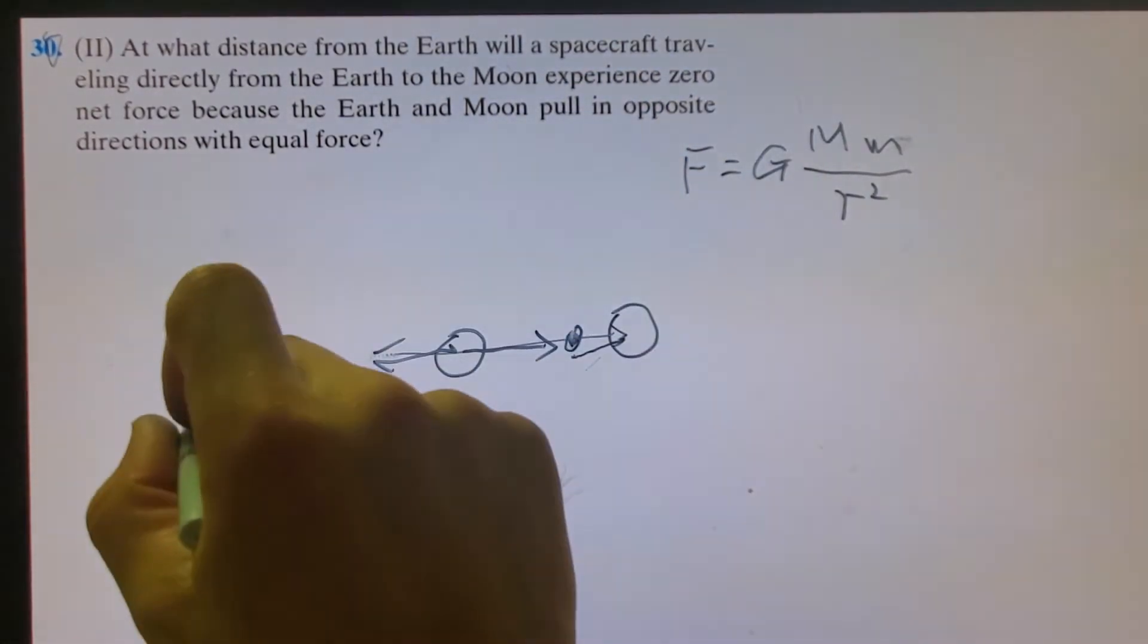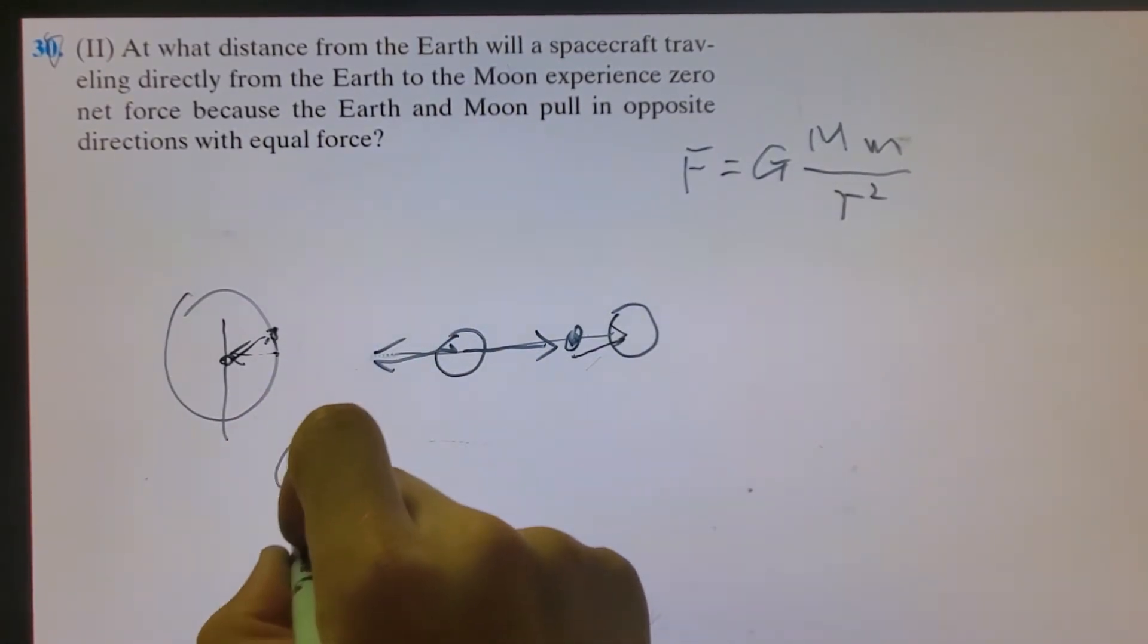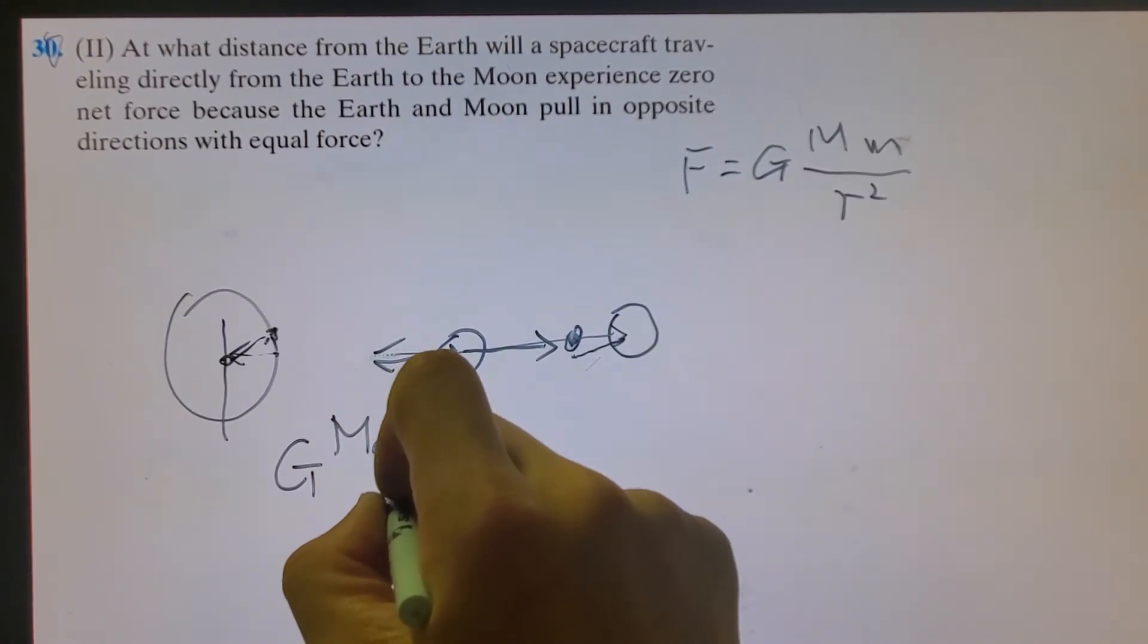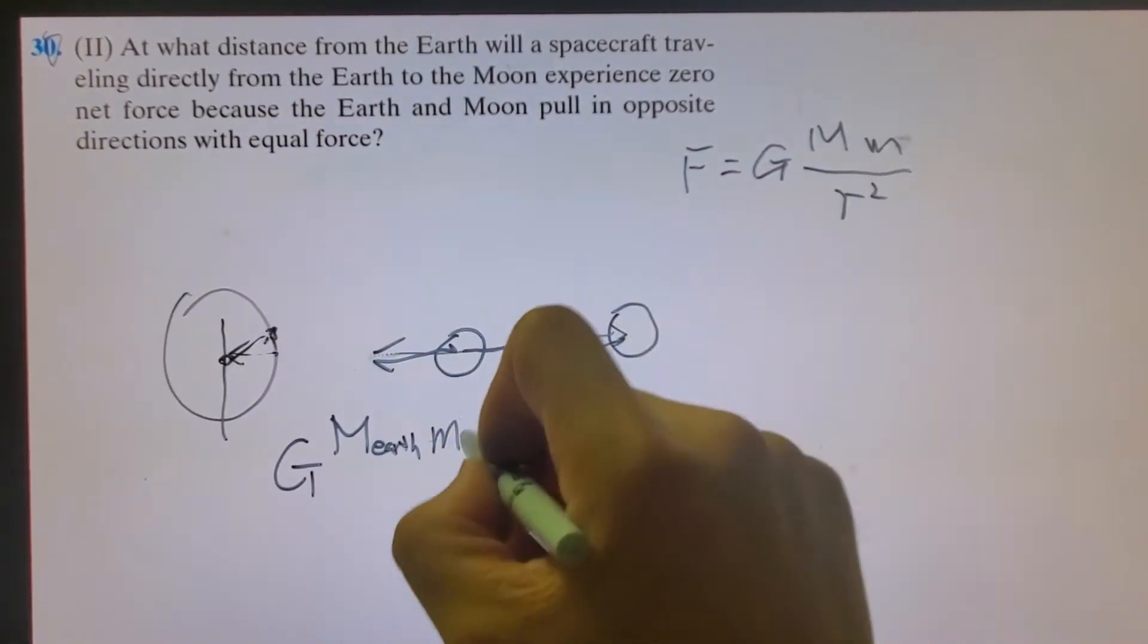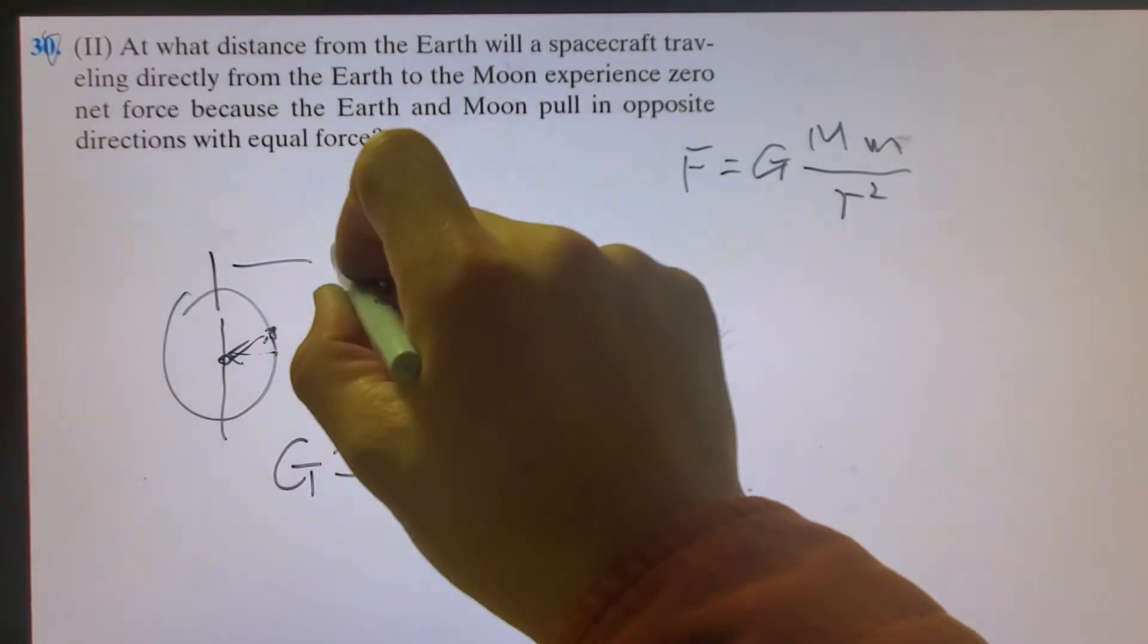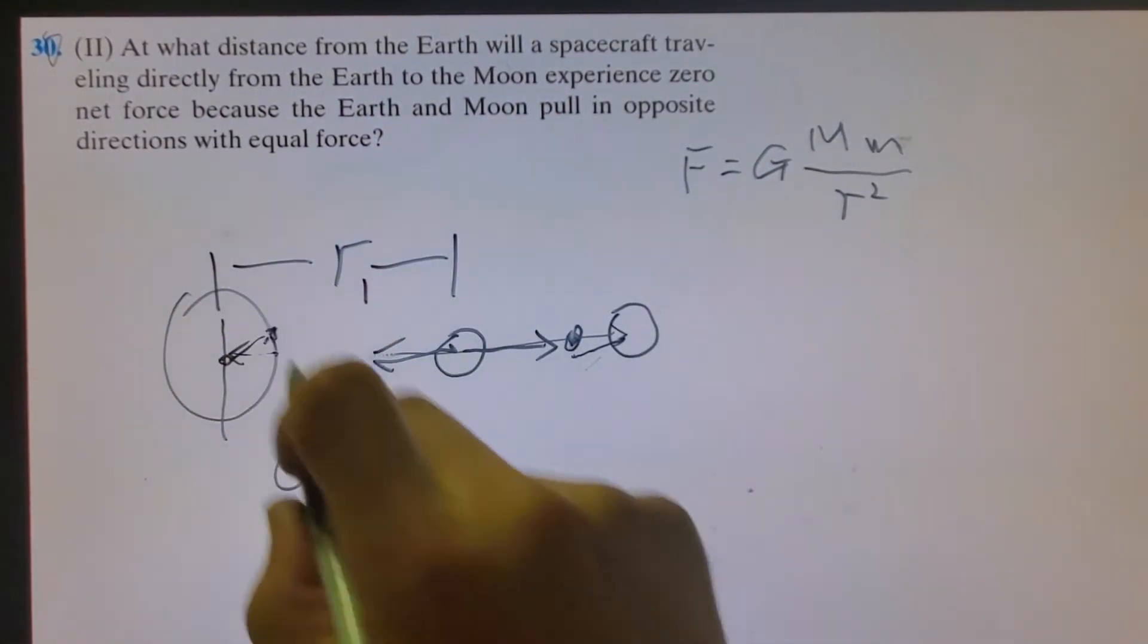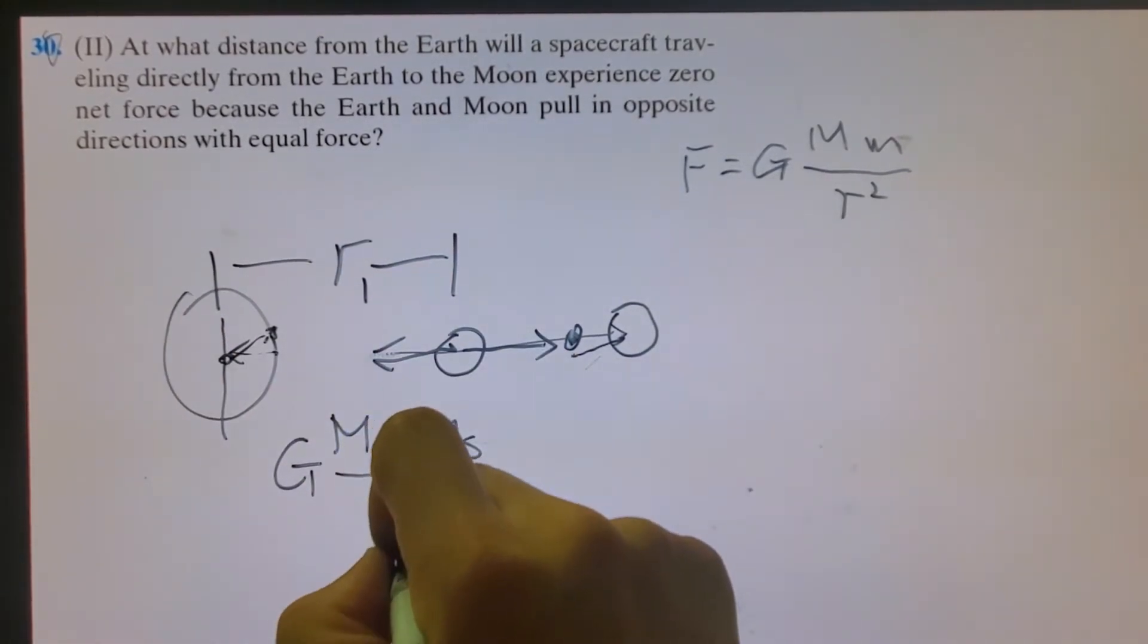It is at the distance, let's say, the force pulling by Earth will be equal to G times M of the Earth, times M of the spacecraft, divided by this one, this radius, R1. That is the distance between the Earth and spacecraft, R1 squared.